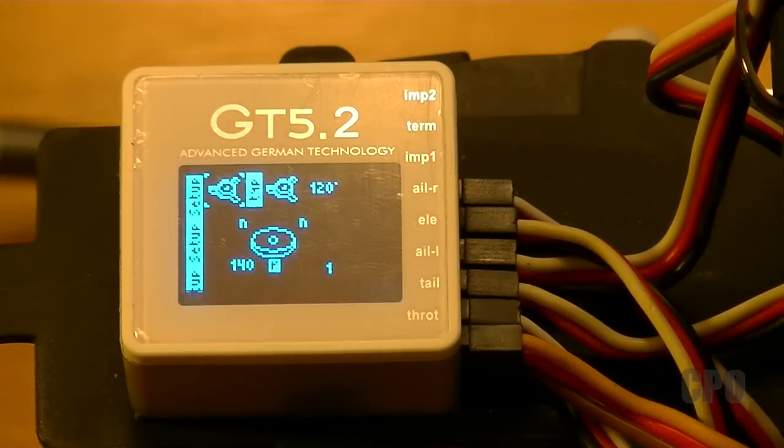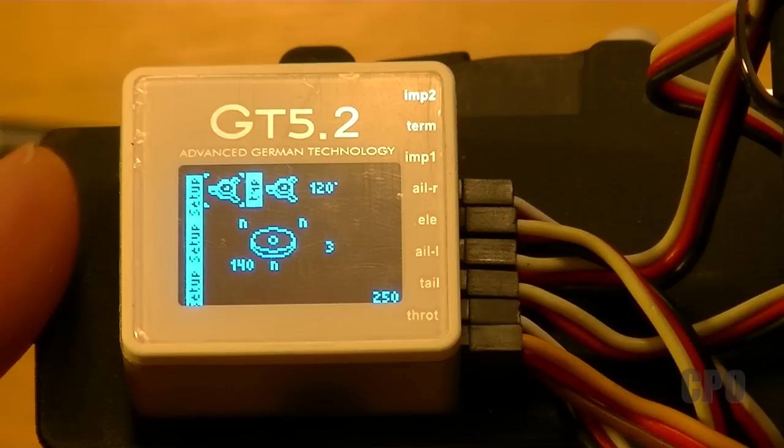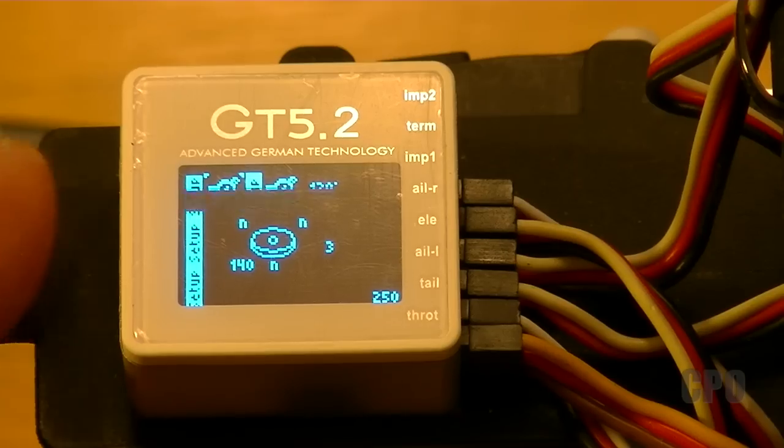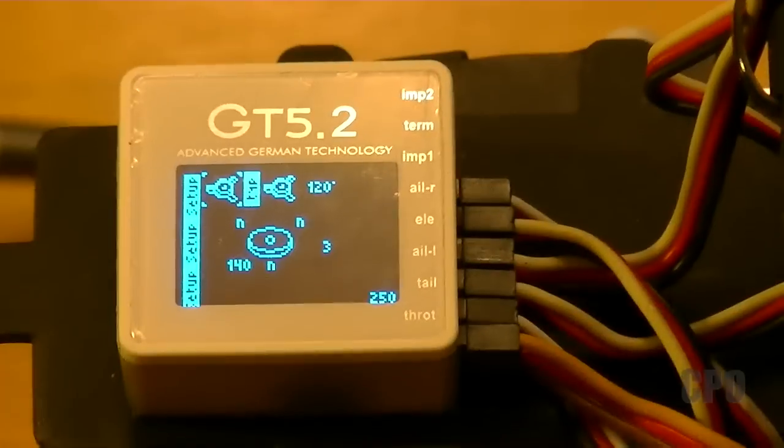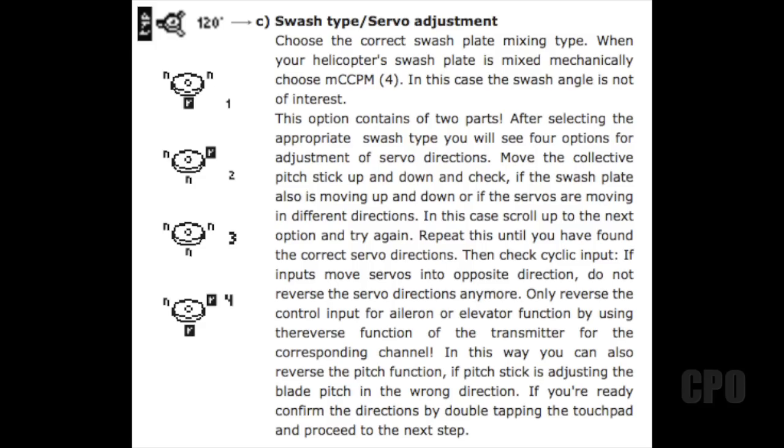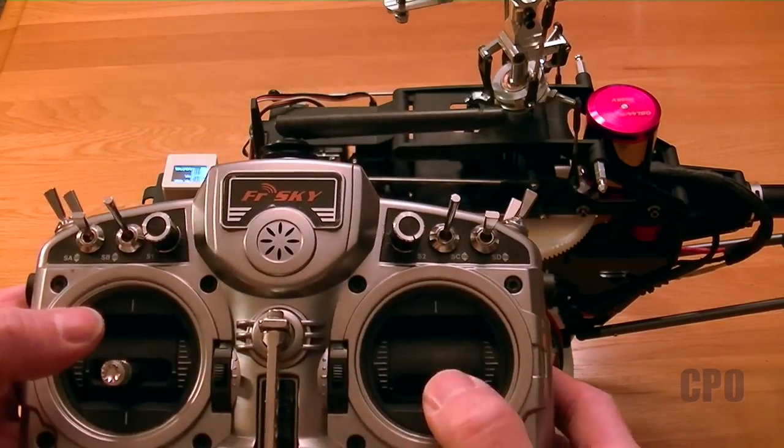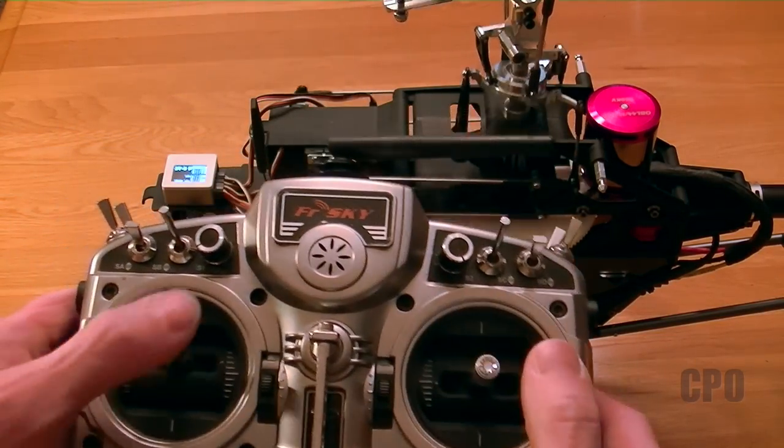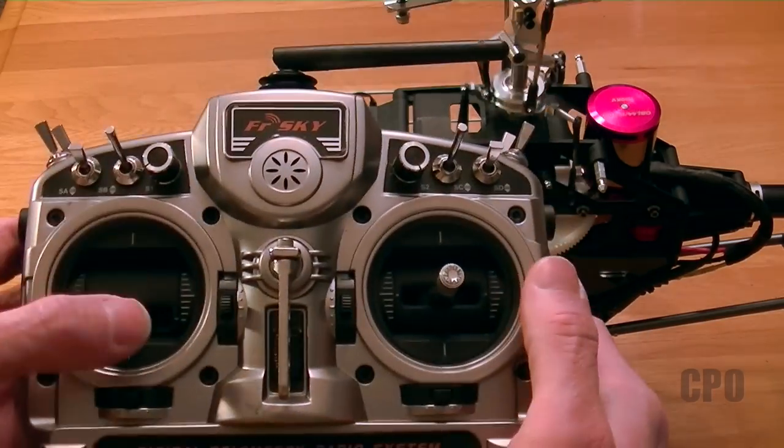I went into the GT 5.2 swash setup and changed my swash direction, still in the 140 degree swash. Changed it from a direction of 1 to a direction of 3, which is none of the servos are reversed. That's different than what's in the manual. The manual calls out a 140 degree swash with direction of 1. There are actually four directions you can pick from. Three is the one that worked for me and I'm assuming that's going to work for most people. But the key is to test it and make sure it's working right.